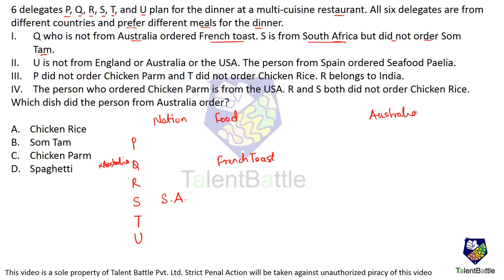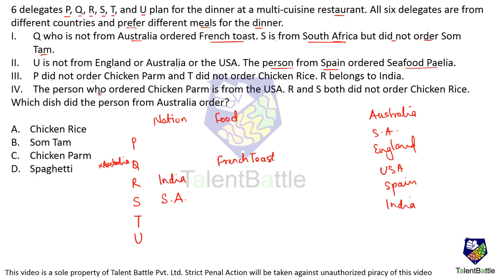The countries are Australia, South Africa, England, USA, Spain, and India. The person from Spain ordered seafood paella. R belongs to India. P did not order chicken palm and T did not order chicken rice. R and S both did not order chicken rice. The person who ordered chicken palm is from USA. Since U is not from England, Australia, or USA, and India and South Africa are taken, U must be from Spain — so U ordered seafood.